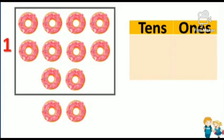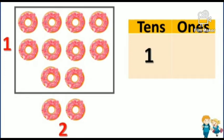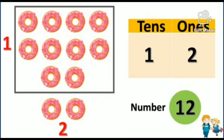Count the remaining doughnuts: one, two. So, how many ones do we have? Two. So, one ten's, two ones. The number is one-two: twelve.